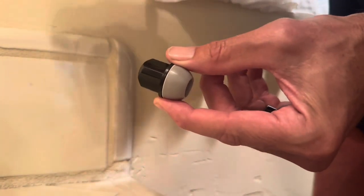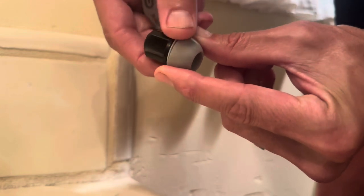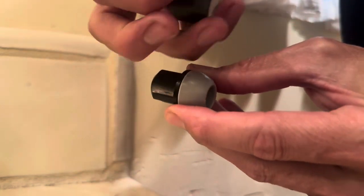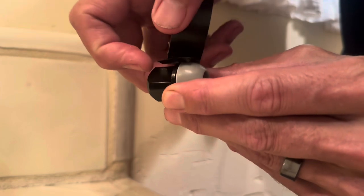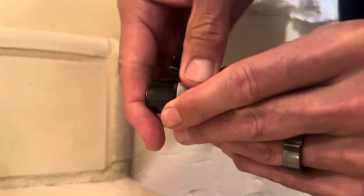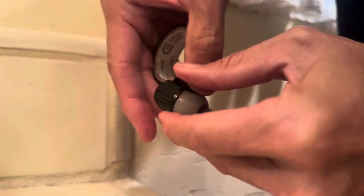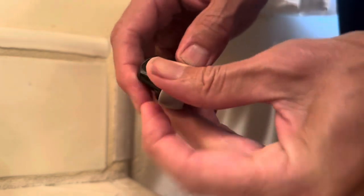So we take that washer, seal, and nut, put them all together, and then we're going to use some electrical tape because it has flexibility in it. We're going to wrap it and pull it tight.